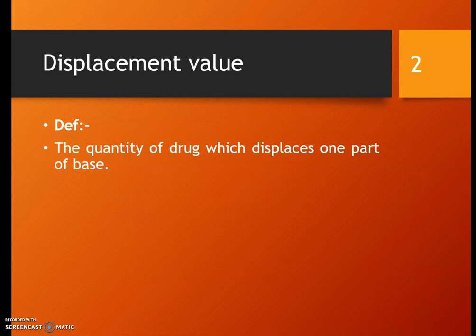Many students get confused with this. They usually write it down as the quantity of base that displaces one part of drug — that's absolutely wrong. It is the quantity of drug which displaces one part of your base. We call it displacement value.